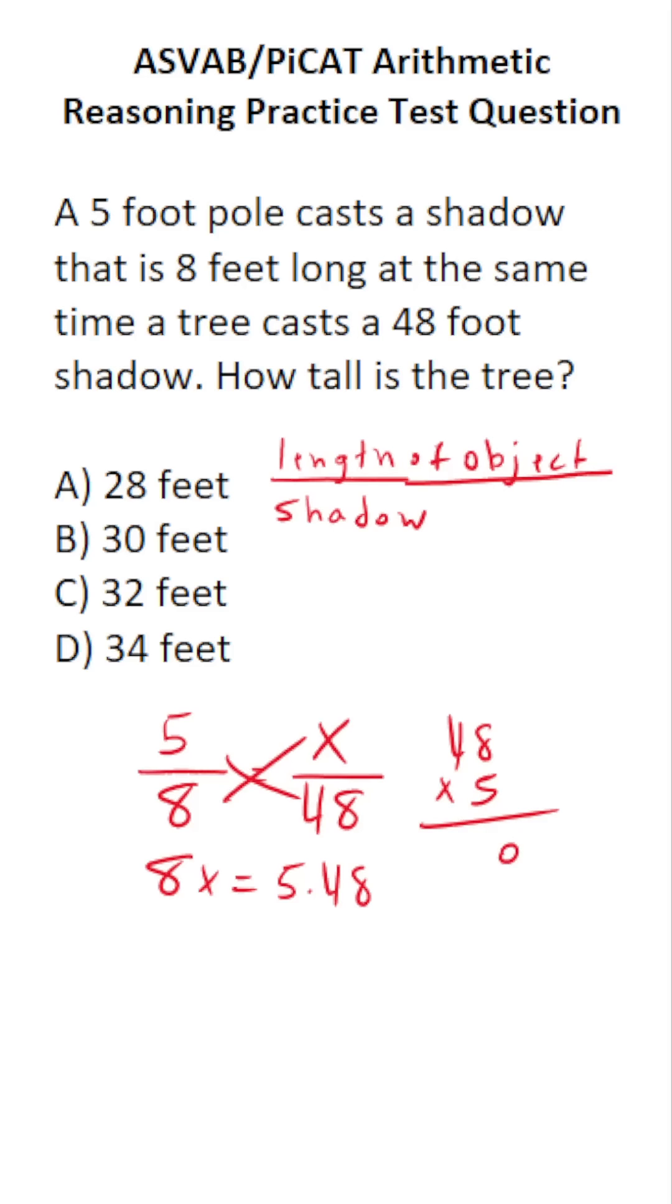8 times 5 is 40, carry a 4. 4 times 5 is 20, plus 4 is 24. So this is 8X equals 240. Divide both sides by 8 to get X by itself. 24 divided by 8 is 3, and just tack on that 0. So this tree is B, 30 feet tall.